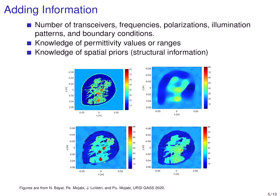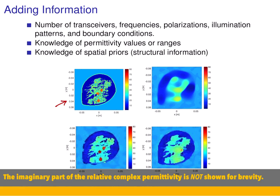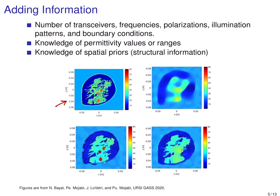To demonstrate the use of spatial priors, we can look at this synthetic target — a breast model. If we do not use any prior information, operating at 1 GHz with 36 transceivers, this is the blind inversion we get. Now if we use structural information derived from ultrasound tomography at three different frequencies, we can get a much better inversion using microwave imaging. However, if the spatial priors from the ultrasound don't include information about certain inclusions, those inclusions will be absent in the result — showing the promise that structural priors can have for the success of microwave imaging algorithms.